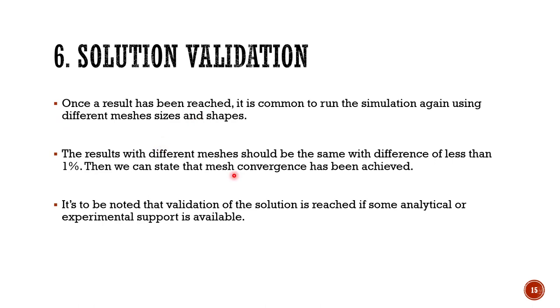The results with different meshes should be the same with difference of less than 1%. That means if you are solving a same problem using two different mesh sizes, the difference in the results like the velocity at outlet or pressure at inlet should be almost same for both those cases. At that point we can say that mesh convergence has been achieved.